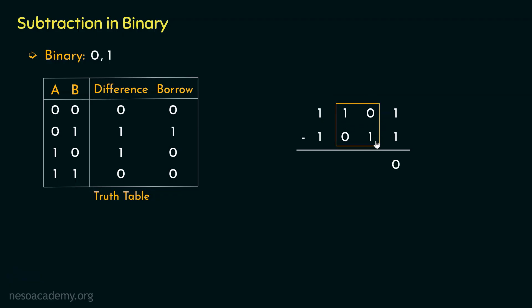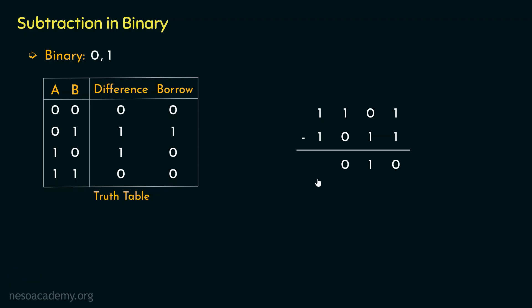We are subtracting 01 from 10 — a two-bit subtraction. 10 is 2 and 01 is 1, so the result is 1, which in two bits is 01. This is easier than performing all the borrows. We consider both bits as a single unit and get the answer. Moving to the most significant bit: 1 minus 1 gives a difference of 0 with no borrow needed.